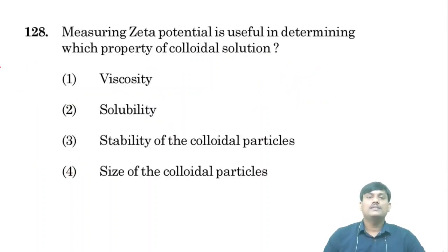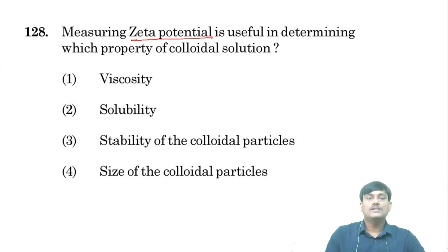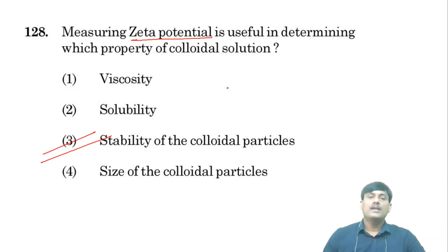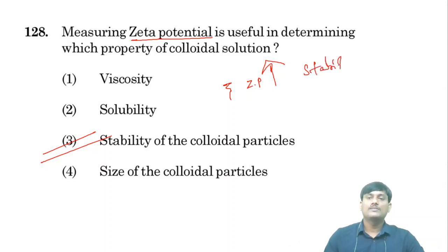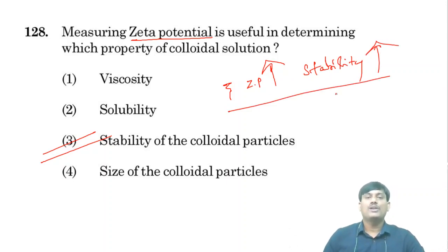Measuring zeta potential is useful in determining the stability of colloidal solutions. As the zeta potential (ZP) increases, the stability of the colloidal particles increases proportionally. Higher zeta potential means greater stability of the colloid.